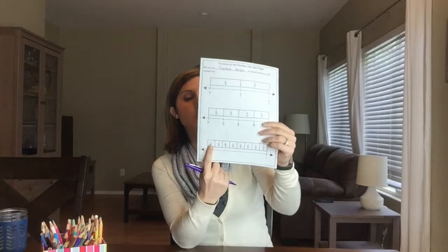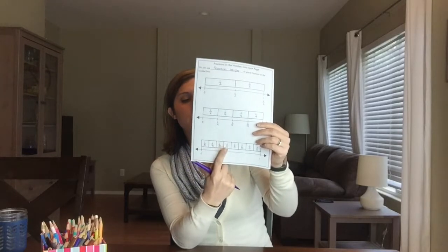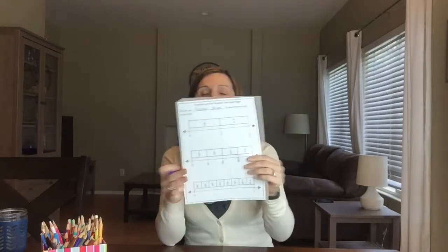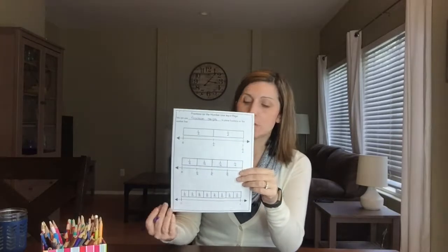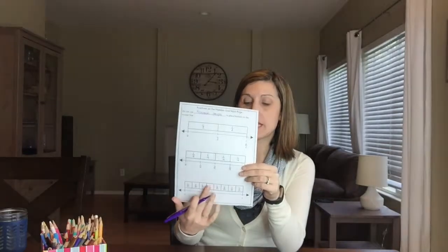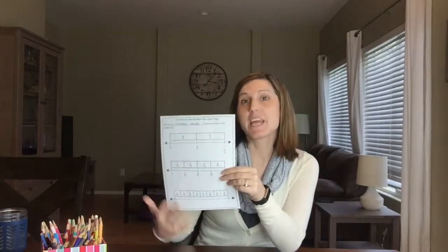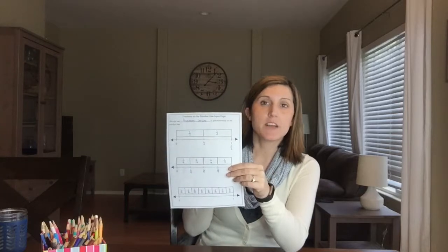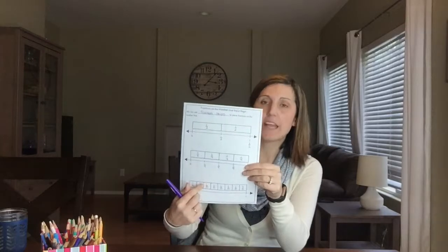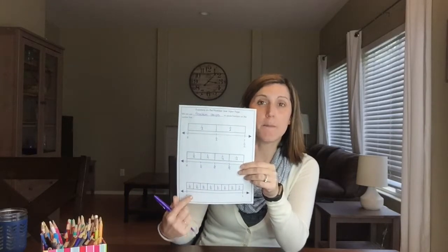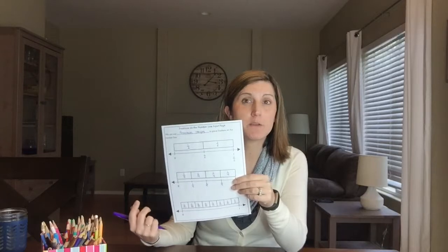One common thing I see kids do with fraction strips or other fraction models is that they will count up — so they'll say one eighth, two eighths, three eighths, four eighths, five eighths. I understand what's going on there, but it's going to cause confusion down the road because we want to think of these pieces, these parts, as like Legos that need to be able to stand on their own and still make sense. So if I broke this piece off and it said two eighths on it, but it's really only one eighth, that's going to be confusing.